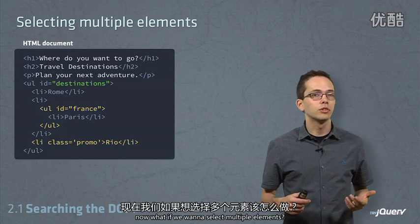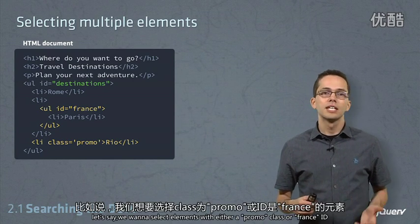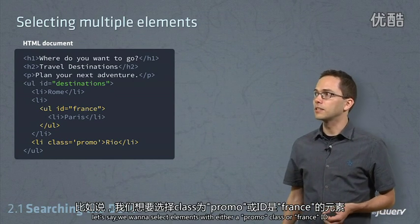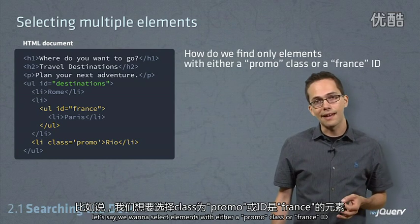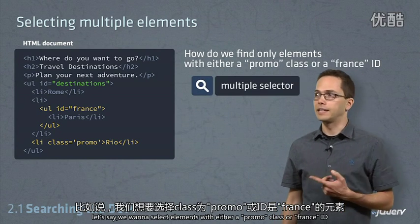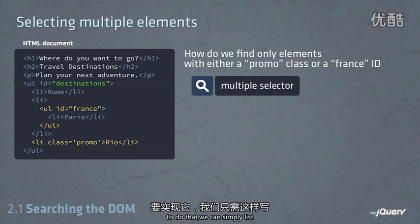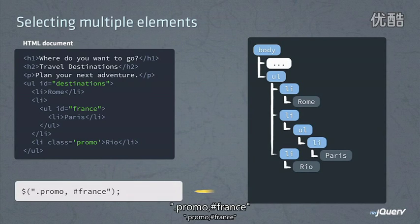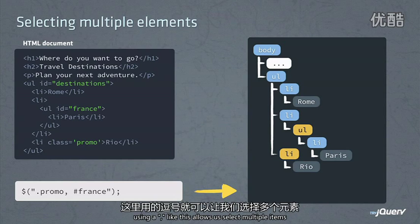Now what if we want to select multiple elements? Let's say we want to select elements with either a promo class or a France ID. To do that, we can simply list .promo, #France. Using a comma like this allows us to select multiple items.